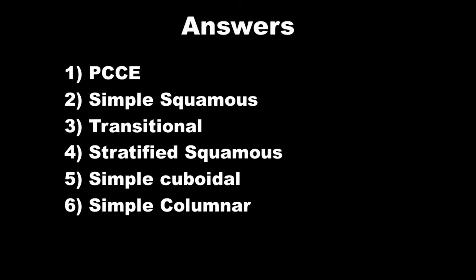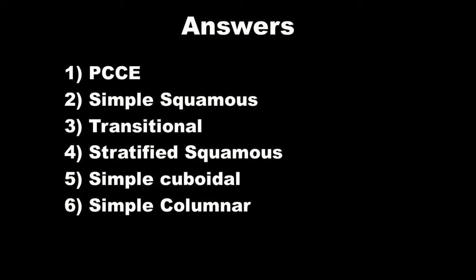Okay, let's check our answers. The first slide was pseudostratified ciliated columnar epithelium. The second one was simple squamous, the third was transitional, the fourth was stratified squamous, the fifth simple cuboidal, and the sixth simple columnar.